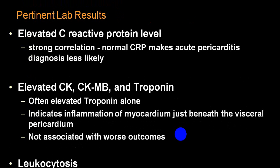C-reactive protein usually suggests inflammation. CPKMB and troponin may be elevated because of associated involvement of the myocardium along with the visceral pericardium. Leukocytosis also suggests inflammation, or what we may call infarction.